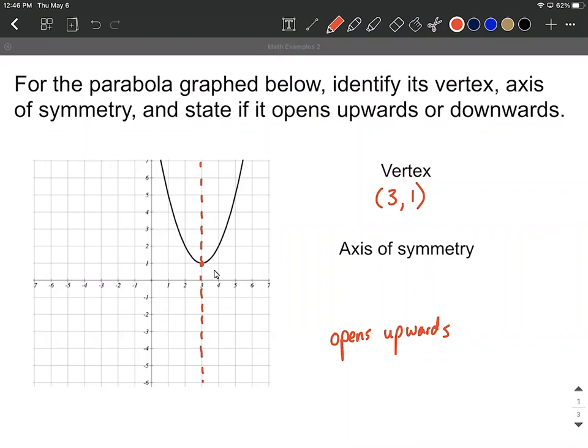All the x values on that vertical line are the same, so it's going to be x equals some number. To pick out what number, remember it goes right through our vertex. Whatever the x value is for the vertex is also x equals that number for the axis of symmetry. Hope this helps out on completing these problems. Good luck.